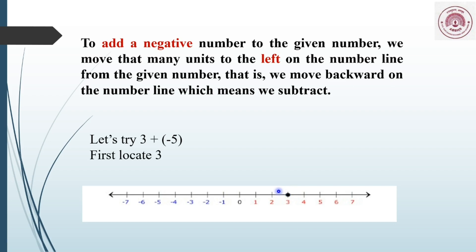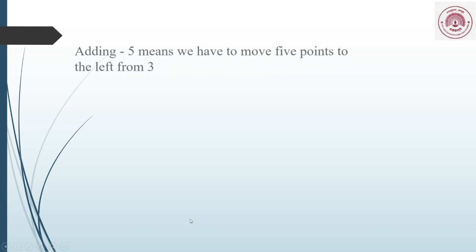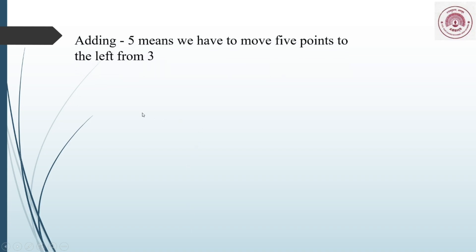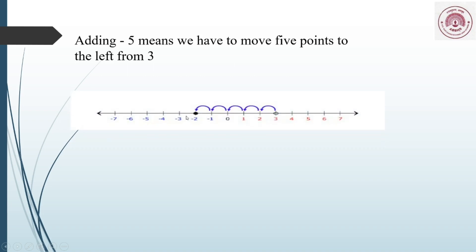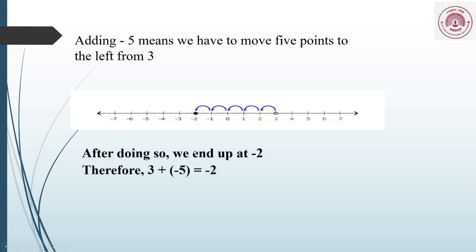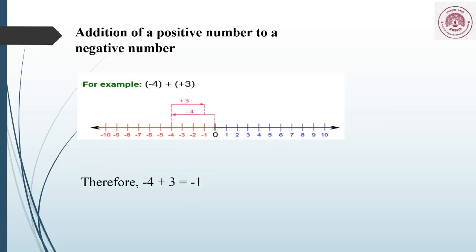So from 3, we count 1, 2, 3, 4, and 5 steps to the left. Adding minus 5 means we move 5 points to the left from 3. We reach minus 2, which means 3 plus minus 5 is minus 2.